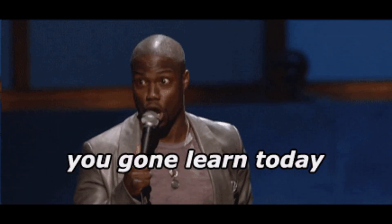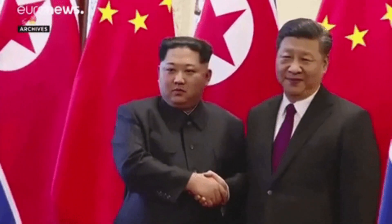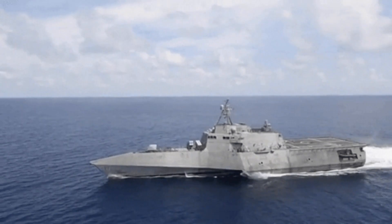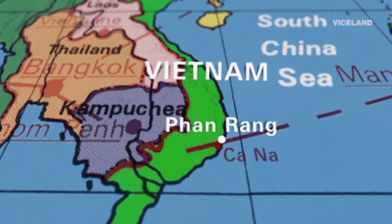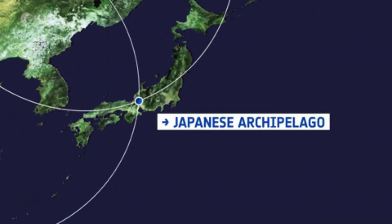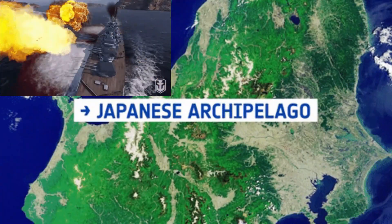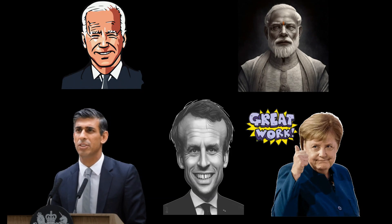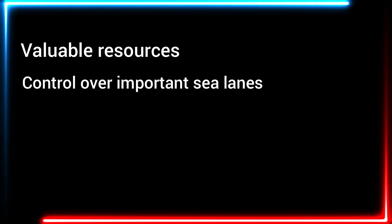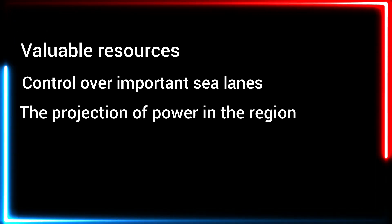Today, China's expansionist theory finds expression in various aspects of its foreign policy. One key principle is the pursuit of territorial claims, particularly in the South China Sea. China's construction of artificial islands and military installations in disputed waters have raised tensions with neighboring countries and sparked concerns among the international community. China's territorial assertiveness in the South China Sea is driven by its strategic interests, including access to valuable resources, control over important sea lanes, and the projection of power in the region.